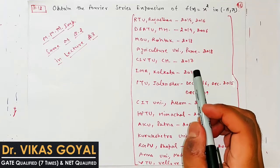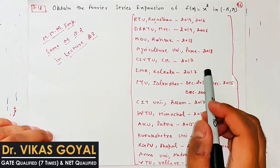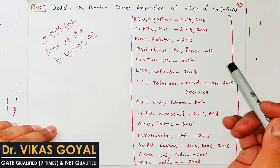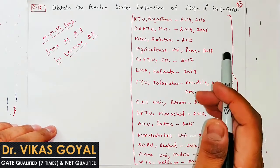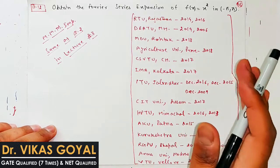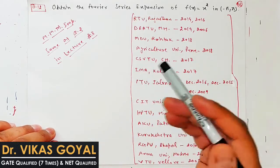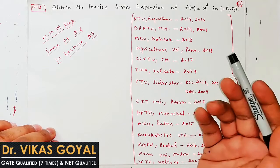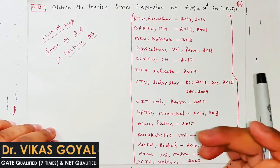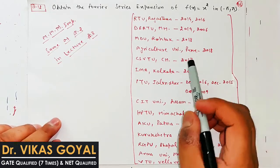Hello students, my name is Dr. Vikas Goyal and welcome back to my YouTube channel, Math Commenters. Hamara chapter chal raha hai Fourier series, aur Fourier series mein ab tak hum 11 video lectures upload kar chuke hain. Hopefully aapko basics bilkul achhe tarah clear ho chuke honge. Last lecture mein humne even and odd function ke baare mein bataya, uske benefits ke baare mein bataya aur usko check kaise karte hain. Ab hum even and odd function concept ek question par implement karke dekhenge.